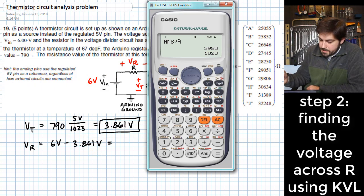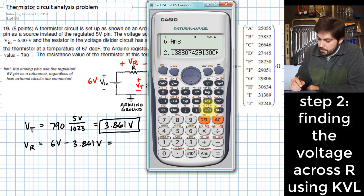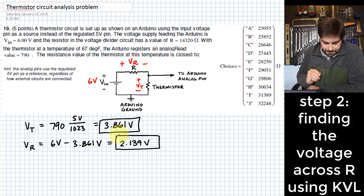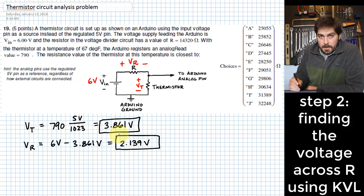So when I punch those in, 6 minus, and then it was really just the previous answer, right? So we can look at that. That is 2.139, we'll say, volts. Alright, so that's our next step.